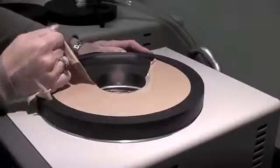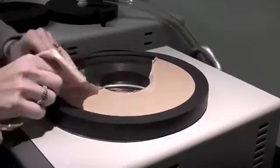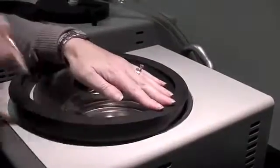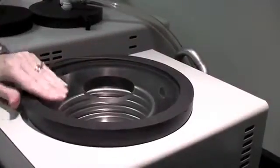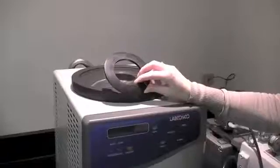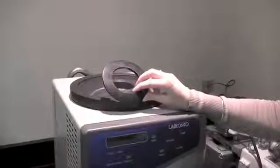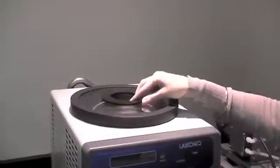Peel off the protective paper backing from the freeze-dryer's chamber lid and place the lid on top of the chamber. Center the flat rubber gasket on the hole in the center of the chamber lid.